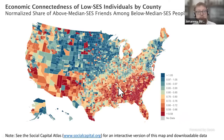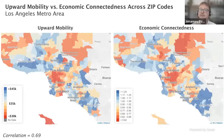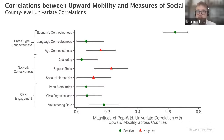One of the nice things about the scale of this data is we can explore variation across counties but also drill into metro areas and look at variation across zip codes. Looking at the LA metro area, on the left is a map of upward economic mobility and on the right is the distribution of economic connectedness across zip codes. Again, areas with high economic connectedness also tend to have high economic mobility. We then study this more formally through univariate correlations between social capital measures and upward economic mobility at the county level.